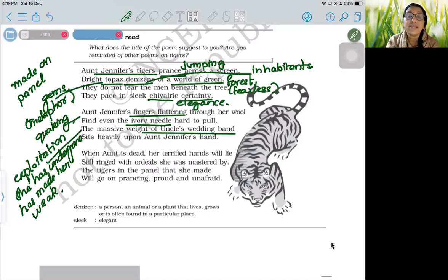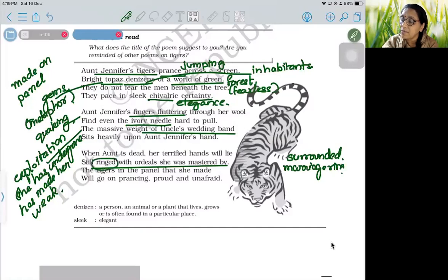The third paragraph says when aunt is dead, her terrified hands will lie still ringed with ordeals she was mastered by. In papers, this often comes: ringed has two meanings. One, ring means surrounded. And the other ring means the ring that we wear, the marriage ring. This is a pun. It has two meanings. Even when she is dead, her hands will still show the exploitation, along with that ring that she was wearing, that she was mastered by, that she had undergone.